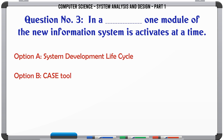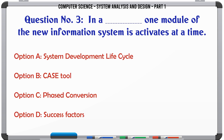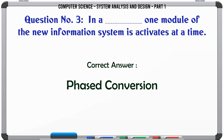In a phased conversion, one module of the new information system is activated at a time. A. System development life cycle. B. Case tool. C. Phased conversion. D. Success factors.